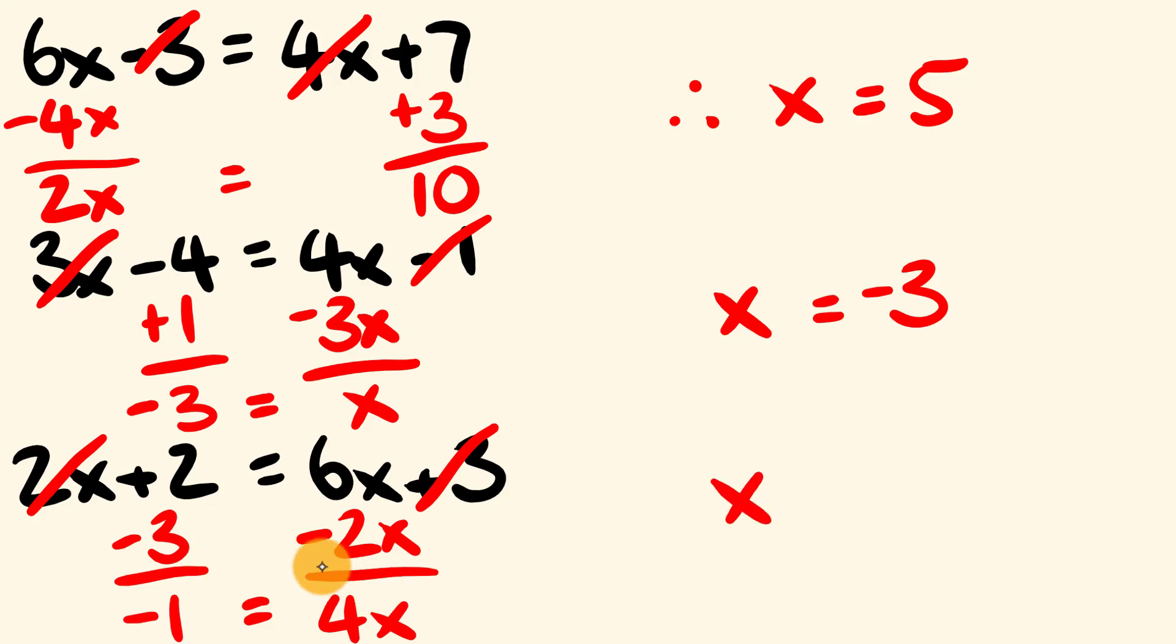Therefore x is going to equal negative 1 divided by 4. That is negative 1 divided by 4, negative a quarter. Is that what you got? Hopefully. Hopefully you got 3 for 3 there.